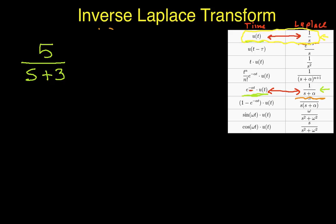Well, not directly, because we need 1 over s plus alpha. In this case, alpha would be 3. But we need to have this be 1. But in the same way that we did before, we can write this as 5 times 1 over s plus 3.